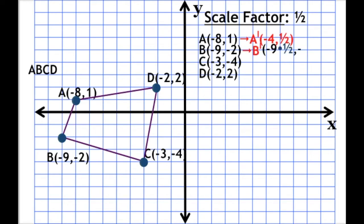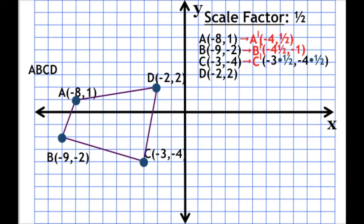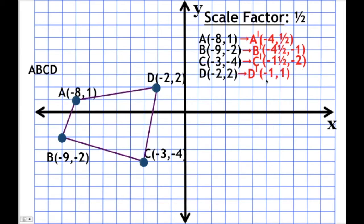How about B? B prime is going to be negative 9 times one half and negative 2 times one half. Negative 9 times one half is negative 4.5, and negative 2 times one half is negative 1. So B prime is at (-4.5, -1). How about C? C prime is going to be negative 3 times one half and negative 4 times one half. Negative 3 times one half is negative 1.5, and negative 4 times one half is negative 2. So C prime is at (-1.5, -2). Finally, point D: D prime is negative 2 times one half and 2 times one half, giving us D prime at (-1, 1).